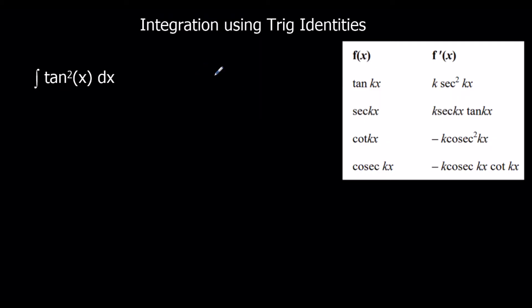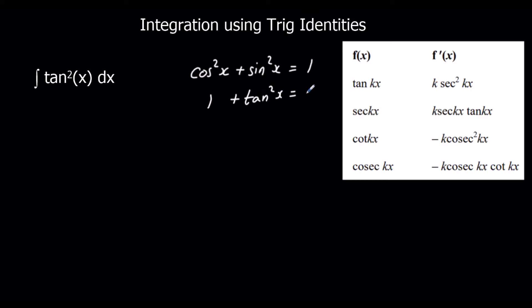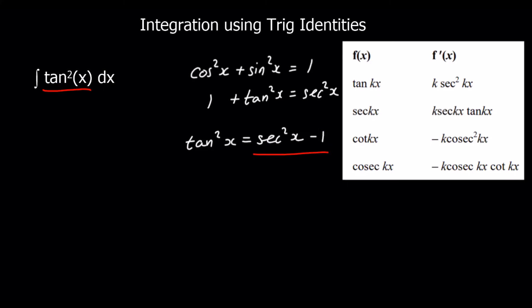The identity I'm using starts from cos squared x plus sin squared x equals 1. If I divide through by cos squared x, that gives me 1 plus tan squared x equals sec squared x. So that's the identity I'm going to use to get rid of tan squared x. Subtracting 1 from both sides gives tan squared x equals sec squared x minus 1.